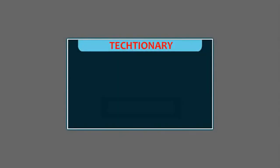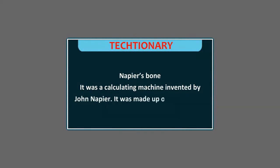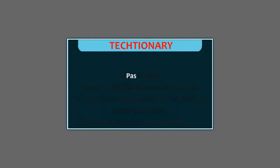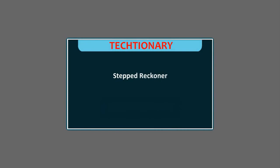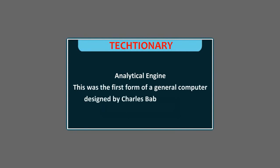Technicary. Abacus: It was the oldest form of the computers which was developed around 5000 years ago. Napier's Bone: It was a calculating machine invented by John Napier. It was made up of a set of rods carved from bones. These rods were used to do multiplication. Pascaline: Blaise Pascal invented this mechanical calculating device which could do addition and subtraction. Stepped Reckoner: Godfrey Wilhelm Leibniz invented this calculating device which could do addition, subtraction, multiplication, and division. Analytical Engine: This was the first form of a general computer designed by Charles Babbage in 1833.